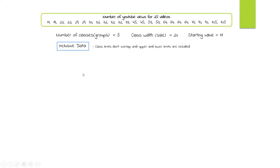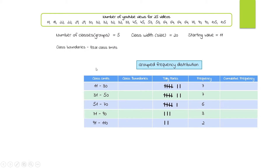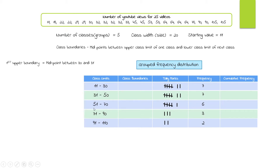Now let's do something called class boundaries, using the same example. This is inclusive data where class limits don't overlap. A class boundary is the real class limit — it fills the gap between consecutive class limits. It is the midpoint between the upper class limit of one class and the lower limit of the next class: so the midpoint between 30 and 31, between 50 and 51, between 70 and 71, and so on.